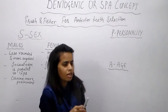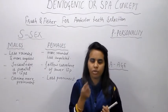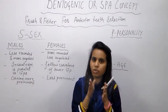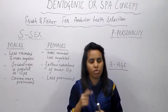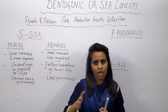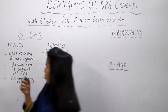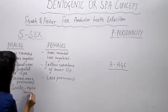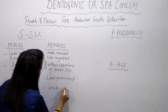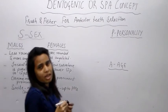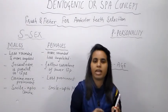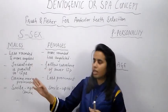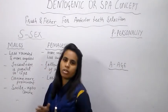Also, during smiling, females have a broader smile extending up to the premolars, so the aesthetic arrangement of anterior teeth should keep premolars in mind as they are visible during smiling. Males' smile is narrower, visible only up to the canines. So in males the smile shows up to the canines, while in females it extends up to the premolars.